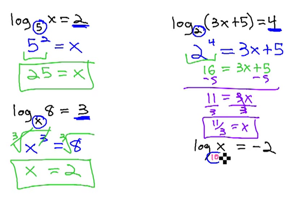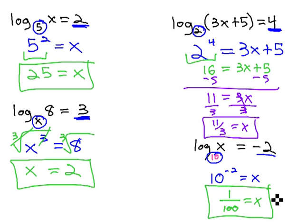When we rewrite this as an exponential problem, 10 is the base, negative 2 is the exponent equals x, and we just have to evaluate 10 to the negative 2. Recall a negative exponent creates a fraction: 1 over 10 squared, and 10 squared is 100. So x equals 1/100.